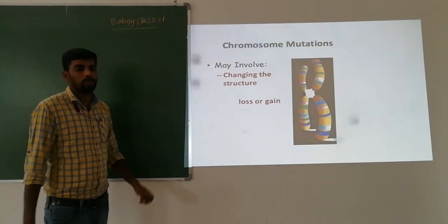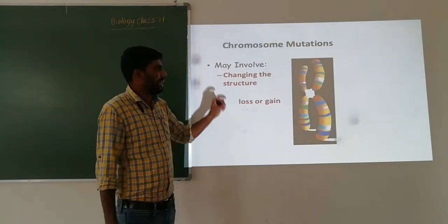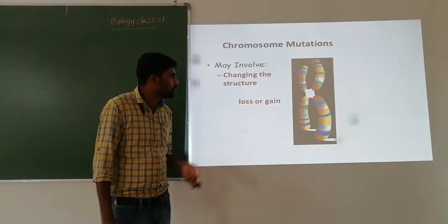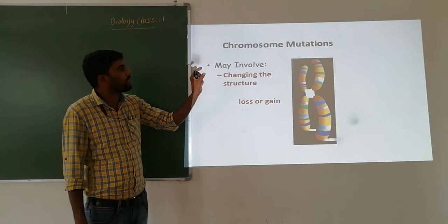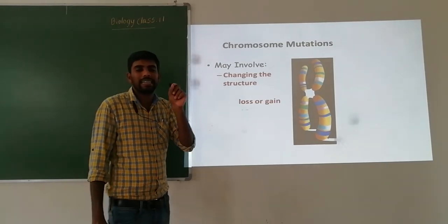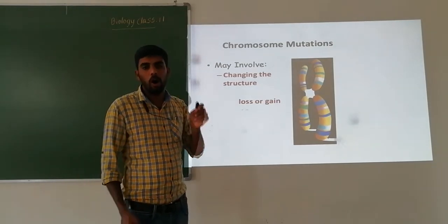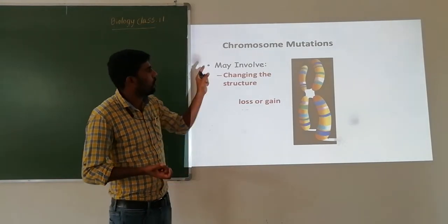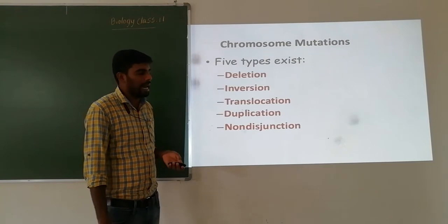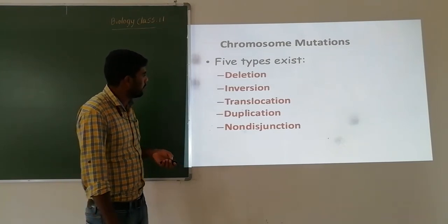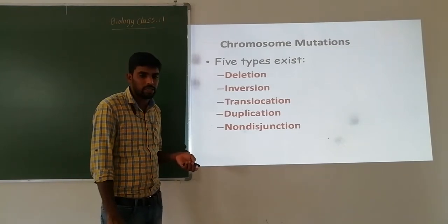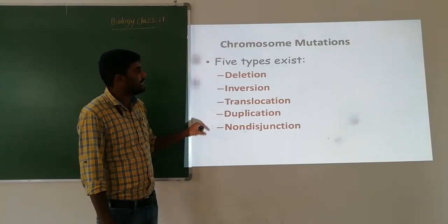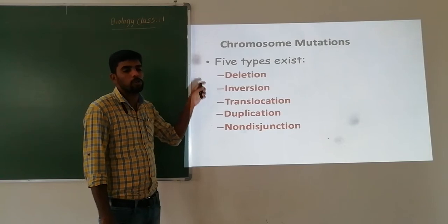Chromosomal mutation means changes occurring in the structure or number of chromosomes. It has several types: deletion, inversion, translocation, duplication, and non-disjunction. Deletion, inversion, translocation, and duplication are all changes in chromosomal structure — also called chromosomal aberrations — and are commonly seen in cancer cells.